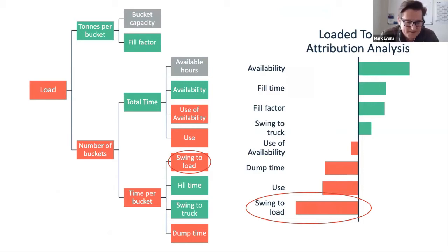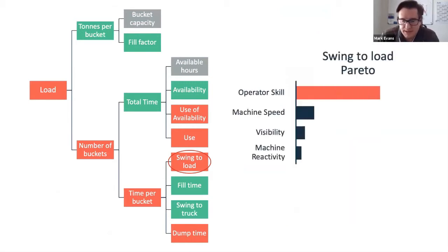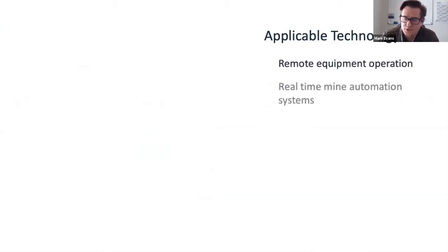In this case it happens to be loader productivity or swing to load. The root cause, having an in-depth understanding of your operations, might be something like operator skill. Now that you know what you're dealing with, the single most important thing you need to be addressing in your organization is operator skill because that's going to move the needle at the bottleneck process.